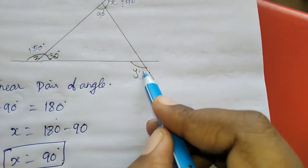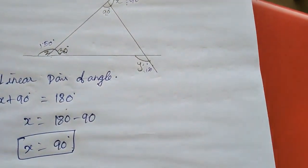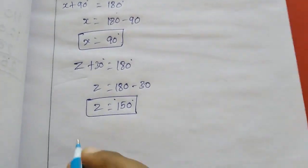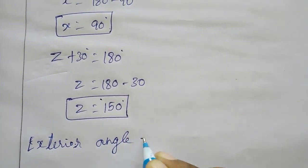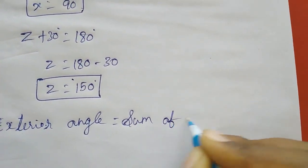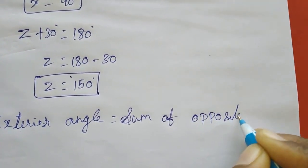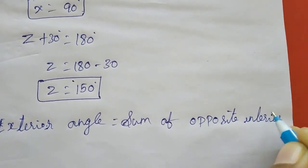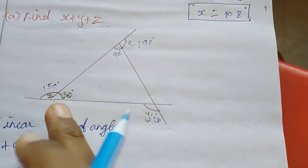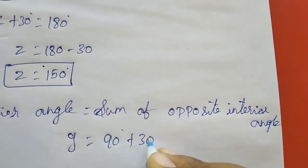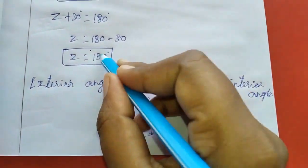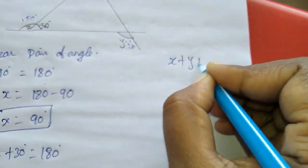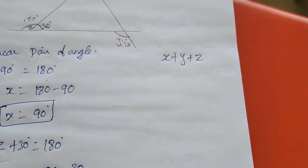For y, using the exterior angle property: exterior angle equals sum of opposite interior angles. The exterior angle is y, so y equals 90 plus 30, giving y equals 120 degrees. Now we know x, y, and z — you have to find x plus y plus z by adding these three angles.